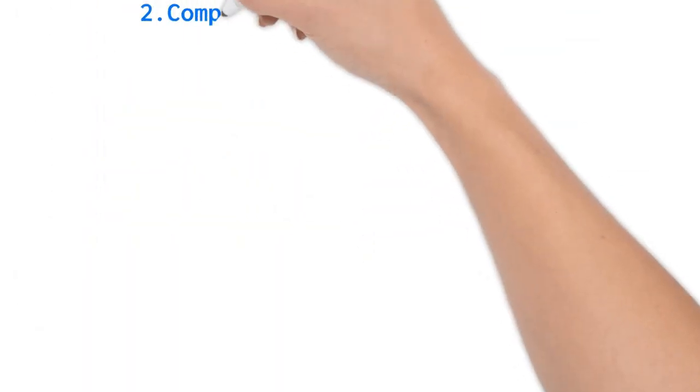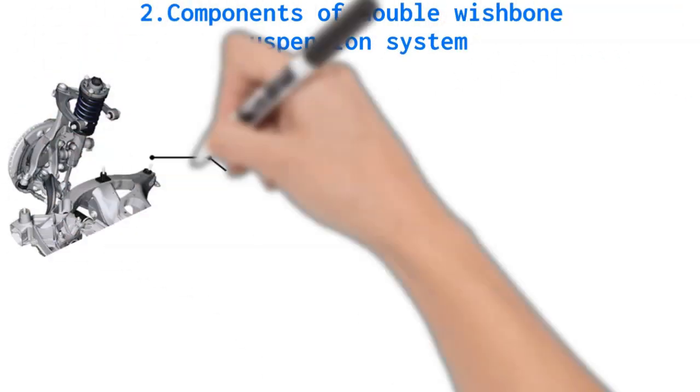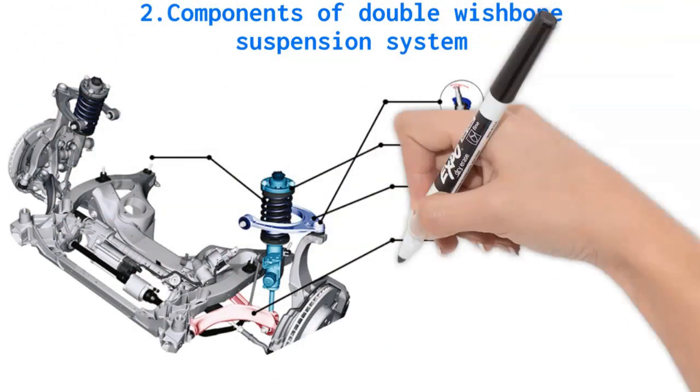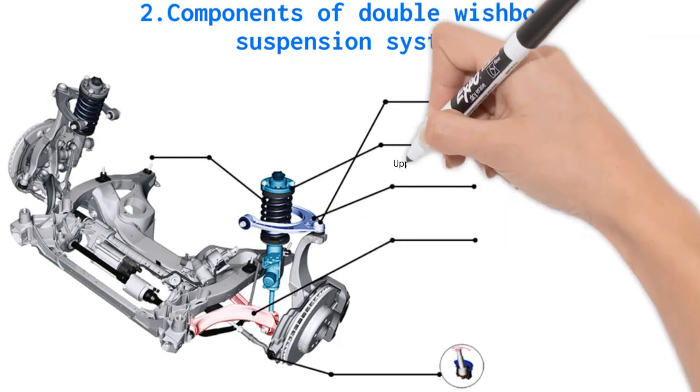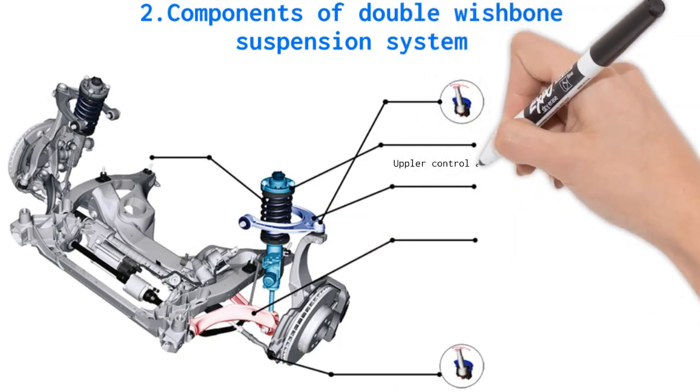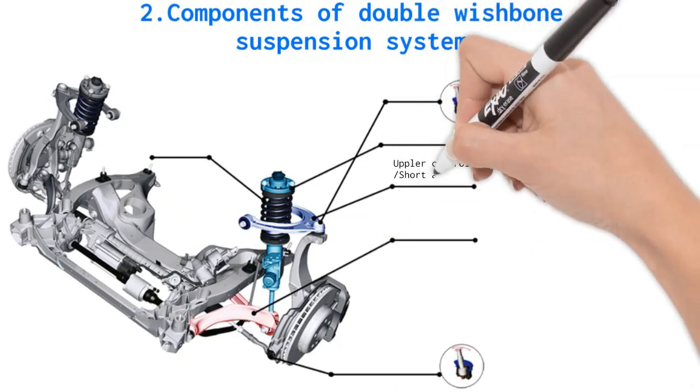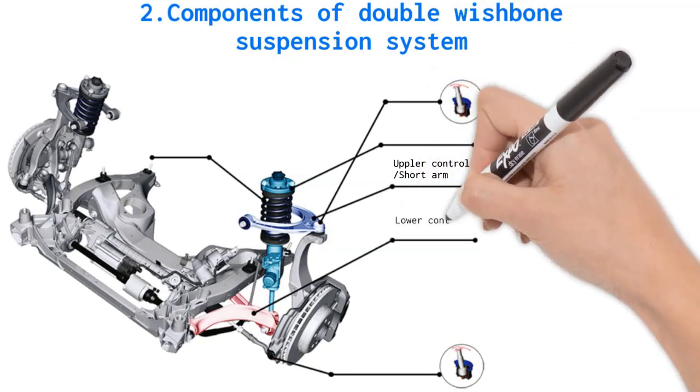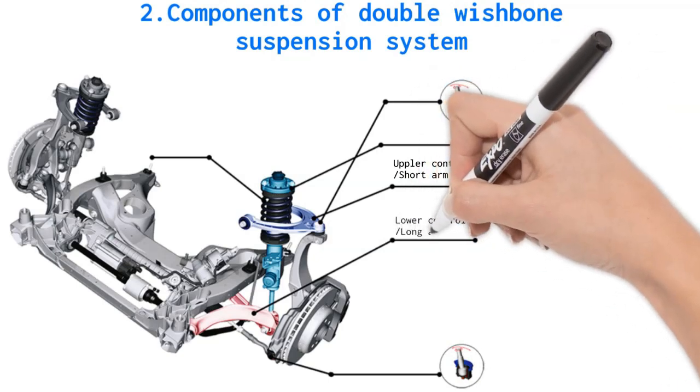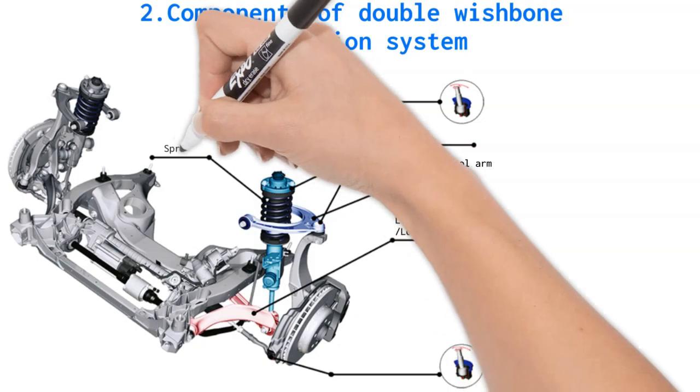Now let's talk about components of double wishbone suspension system. Double wishbone suspension system has majorly five components which are: control arm 1, which is also called short arm; control arm 2, which is also called long arm; spring; shock absorber; and ball joints.